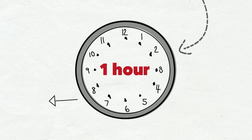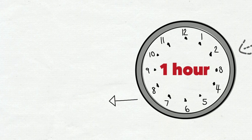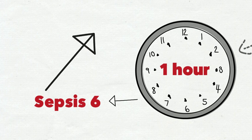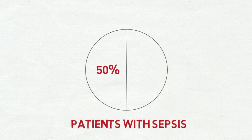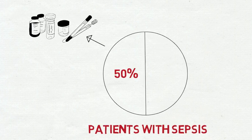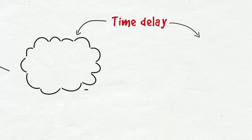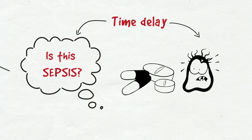Audits throughout this trust have highlighted that initiation of the Sepsis 6 is an area in which we can improve. At present, only around 50% of patients with sepsis are having blood cultures taken, and there is a mean time delay from suspicion of sepsis to antibiotic delivery of 361 minutes, quite significantly longer than our target, 60 minutes.